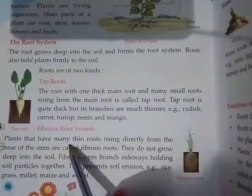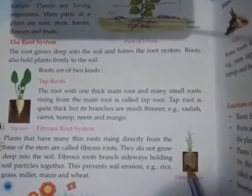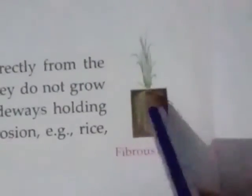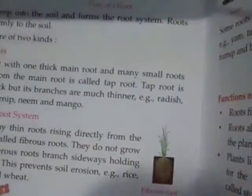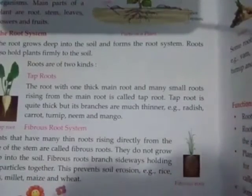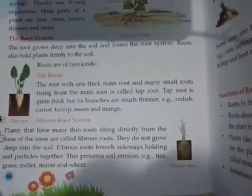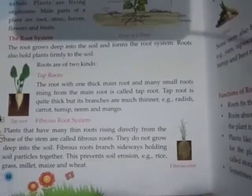Next is fibrous root system. Plants that have many thin roots rising directly from the base of the stem are called fibrous roots. Jo directly base se hi bahut saari ek saath nikl rahi hain — yeh hoti hai fibrous root system. They do not grow deep into the soil. Fibrous roots branch sideways, holding soil particles together — bahut neechi tak nahi jaati par soil particles ko ek saath pakad kar rakhti hai. This prevents soil erosion. For example: rice, grass, millet, maize and wheat. Soil erosion matlab mitti ki barbadi — yeh mitti ki barbadi ko rokti hai kyunki mitti ko pakad kar rakhti hai.